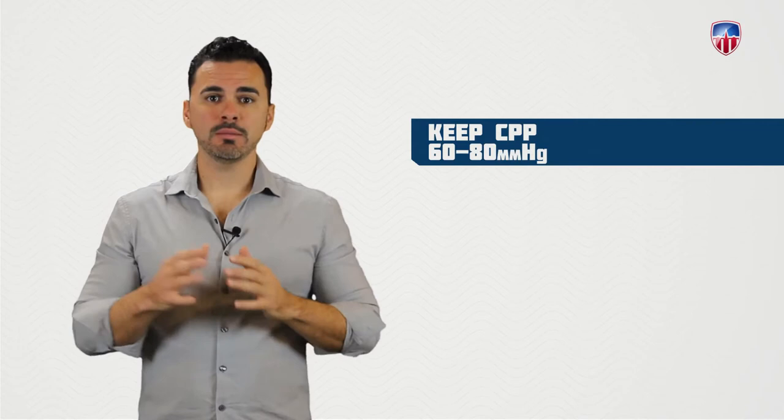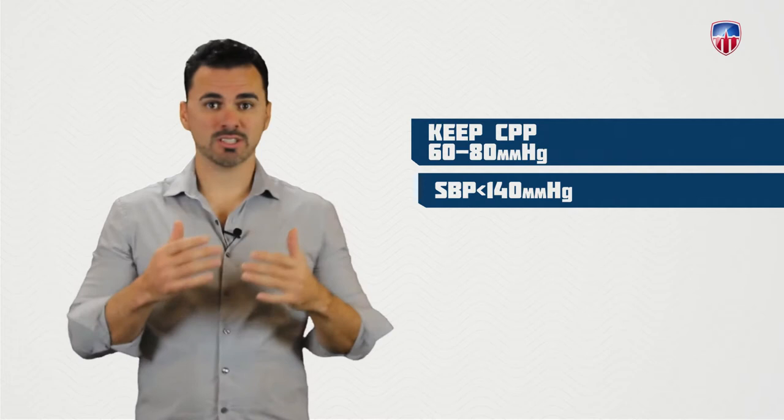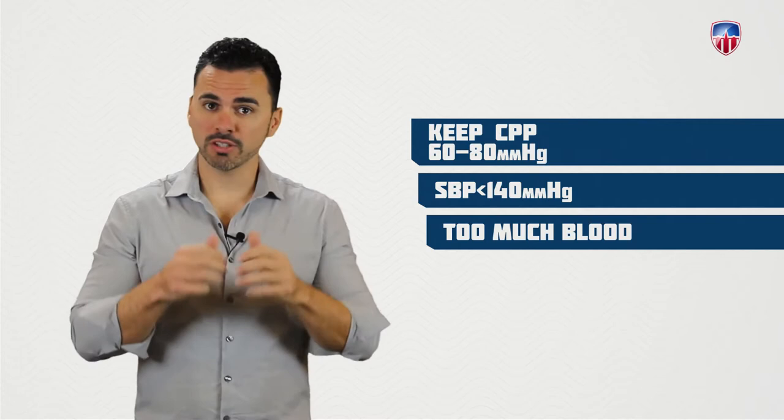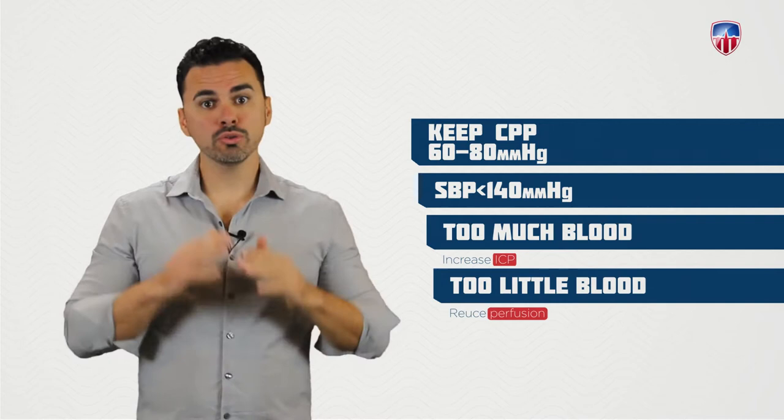In the past, CPP wasn't well understood and keeping blood pressure low was considered the gold standard. Today, higher blood pressure is preferred in this patient population to maintain CPP. For the exam, keeping CPP between 60 to 80 or systolic blood pressure less than 140 is what you can expect. This is a delicate balance — too much blood flow increases ICP, while too little reduces perfusion.